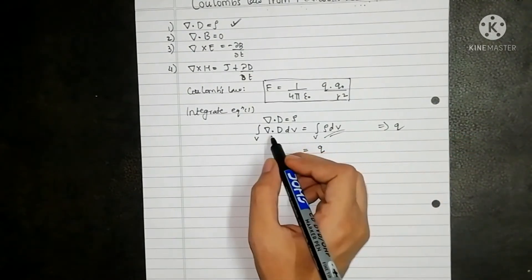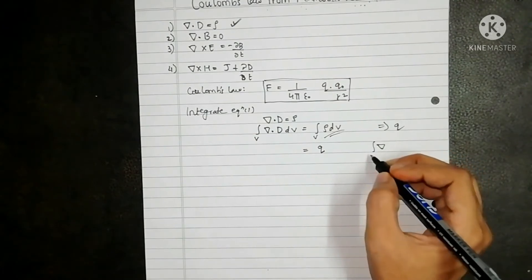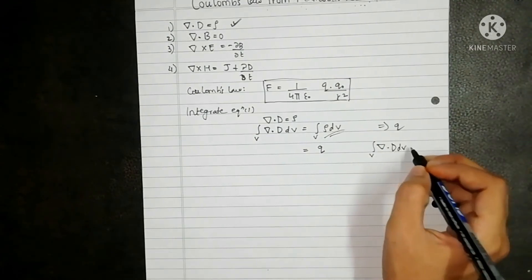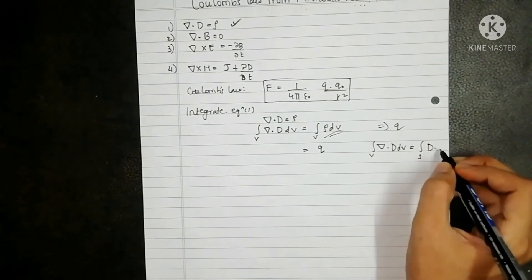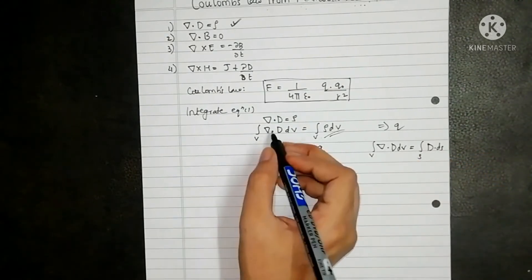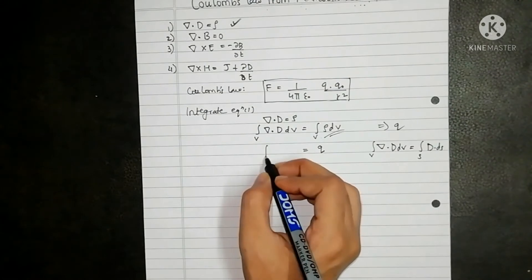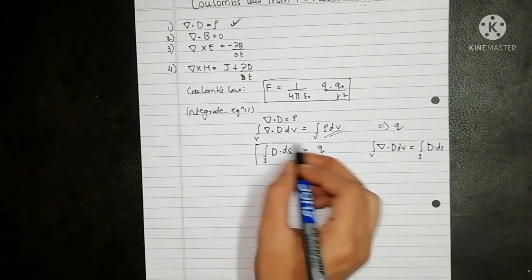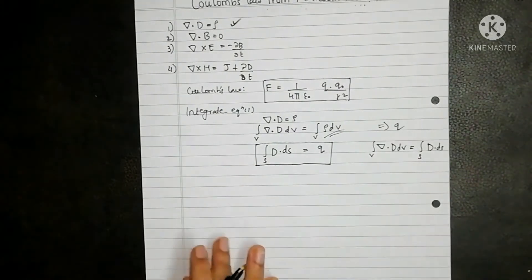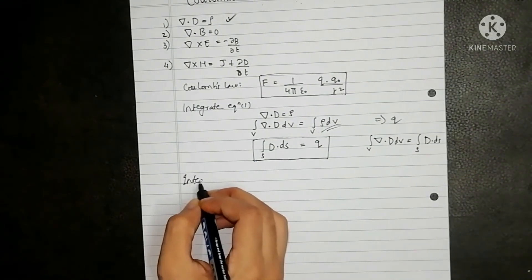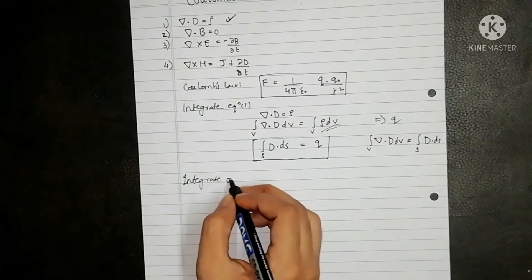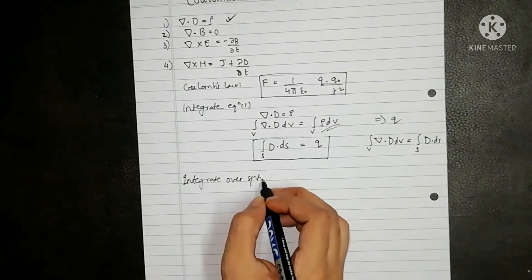And by Gauss's law, del dot D dV is equal to surface integral of D dot dS. So this side will be written as surface integral of D dot dS. Now integrate over sphere of radius r.